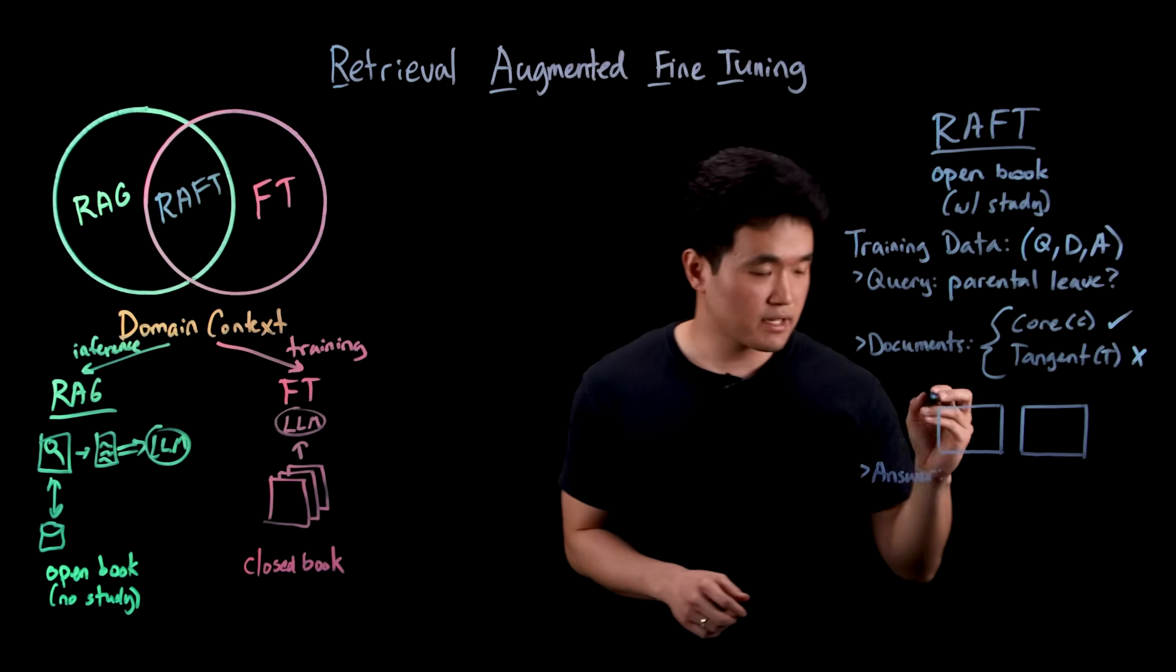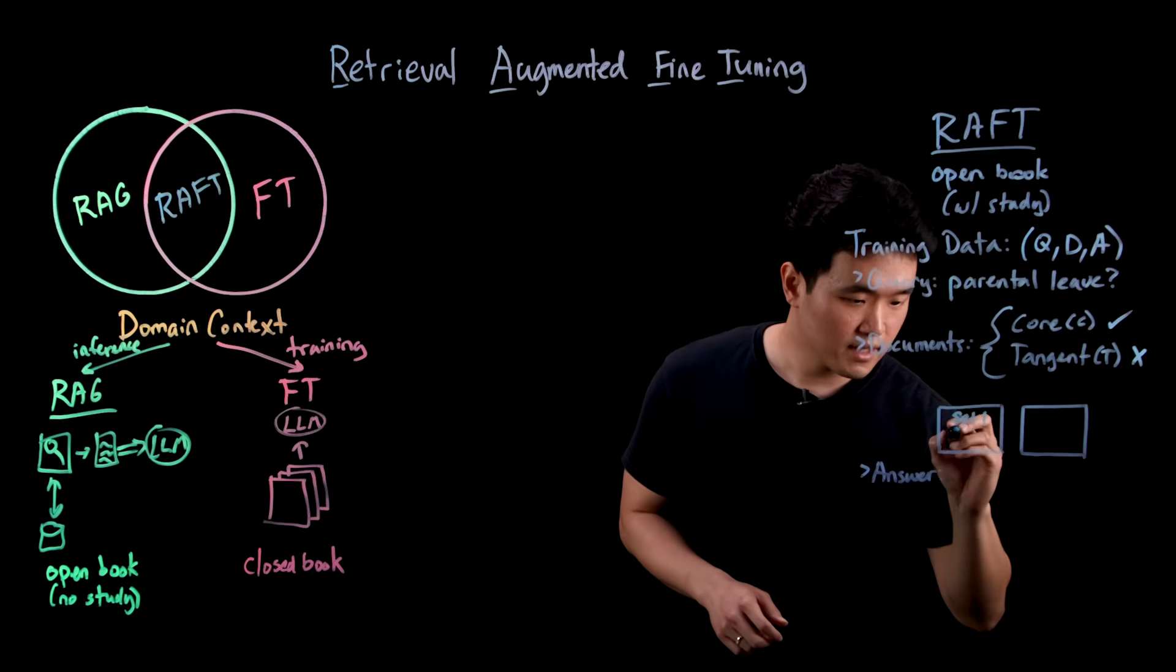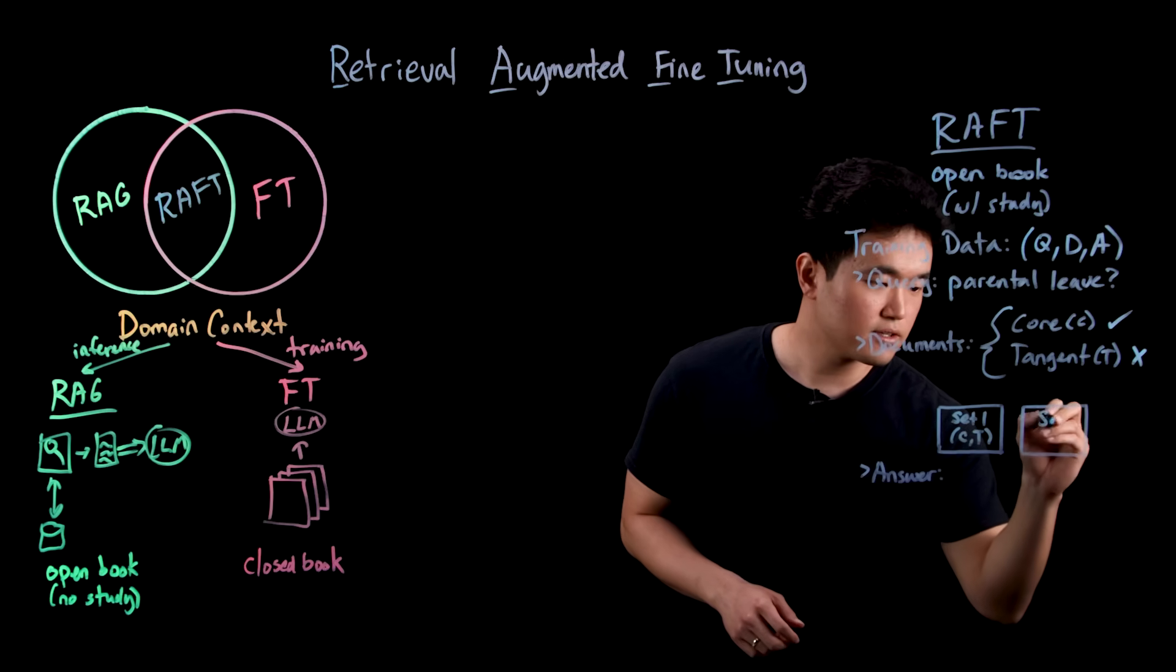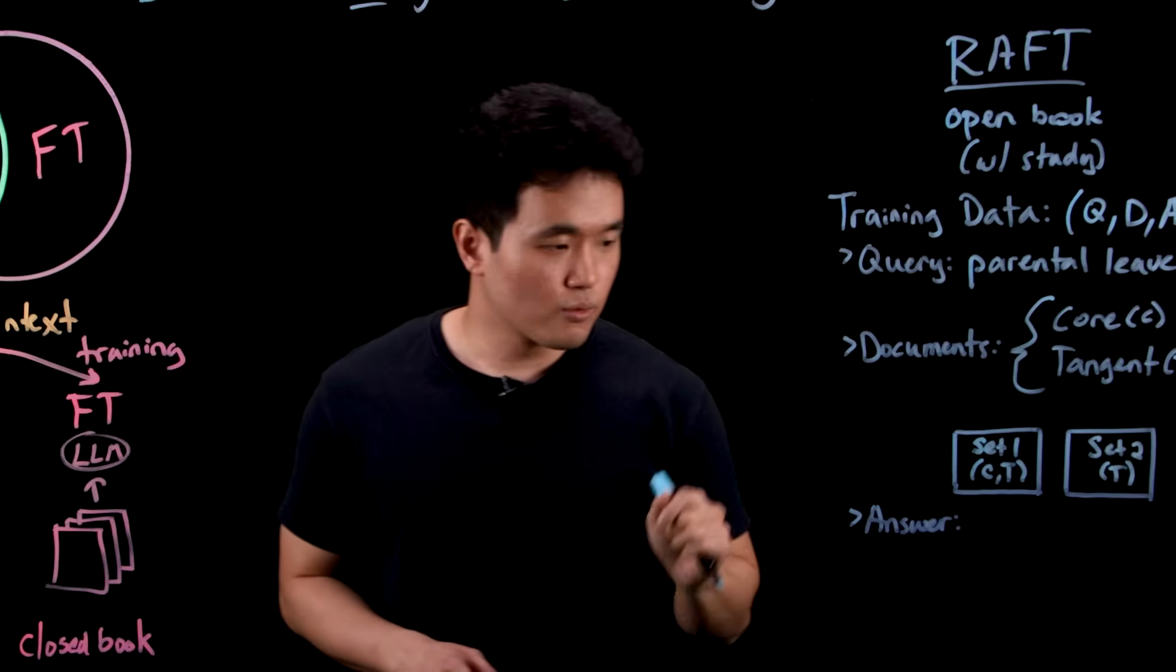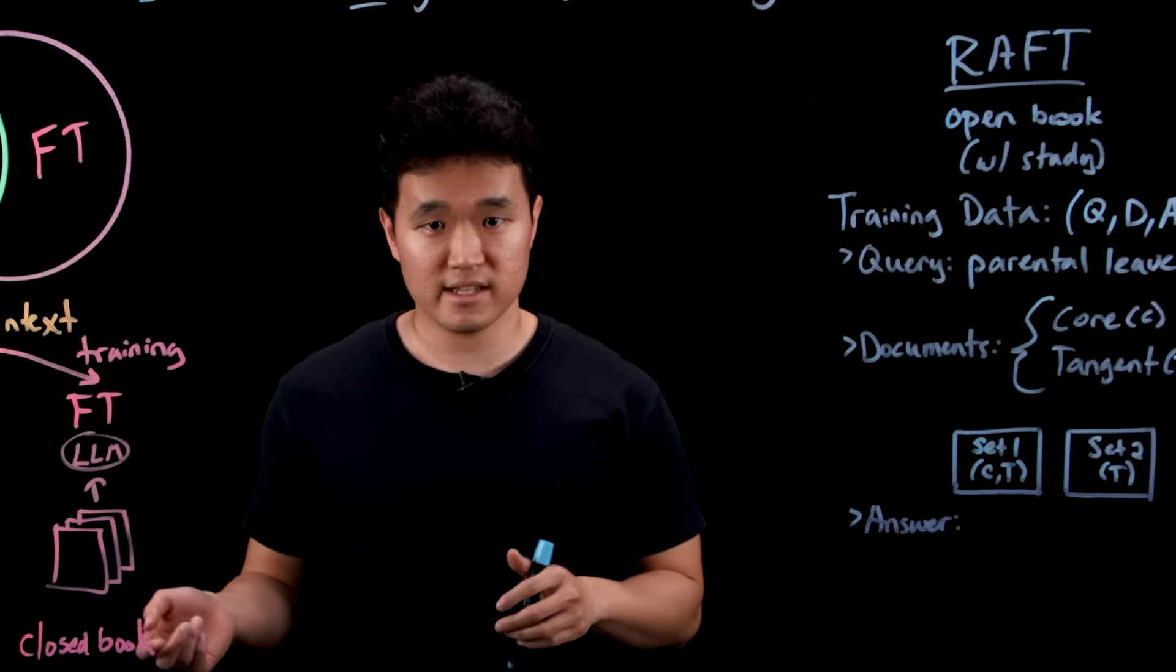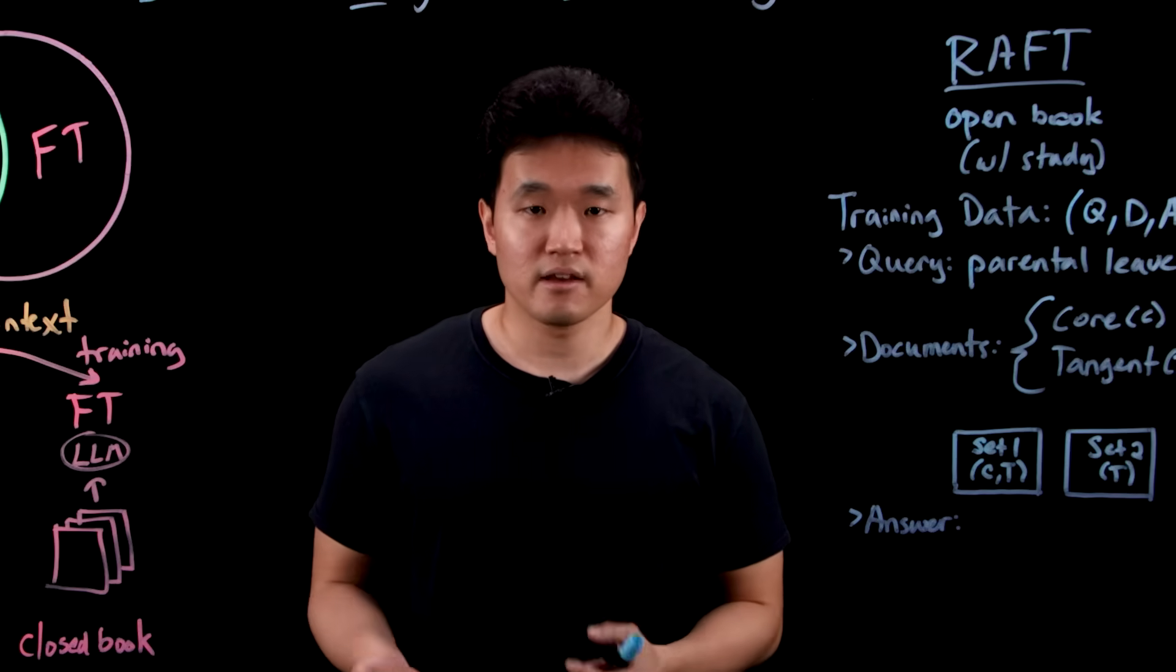From here, we create two types of document sets. Set one contains both core and tangent documents and set two contains just tangent documents. The reason why we include both is to simulate a real RAG use case where the retriever may or may not pull any relevant documents from the database.